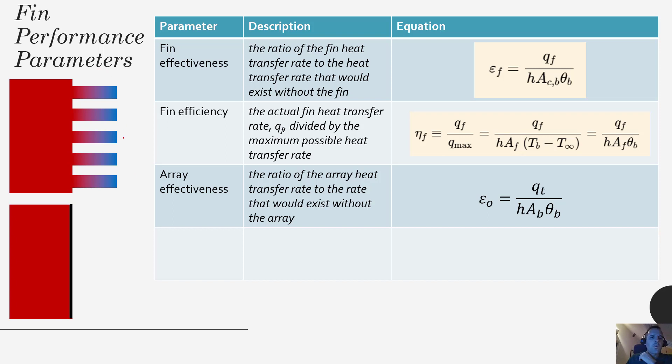So the first parameter for an array is the array effectiveness, which is similar to the fin effectiveness. So the array effectiveness is the ratio of the array heat transfer rate to the rate that exists without the array. So in this case we use this parameter q sub t, which is the total heat transfer rate over the whole array. So the way to calculate that is you would take each individual fin and you would calculate q sub f. So you'd have n times q sub f,